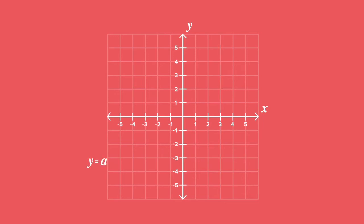When y equals a, where a is an element of real numbers, we get the equation of a horizontal line perpendicular to the y-axis and parallel to the x-axis. The gradient of this line will be 0. For example, y equals negative 2.